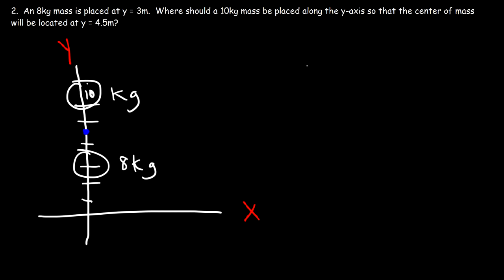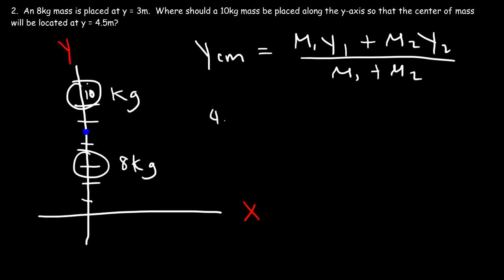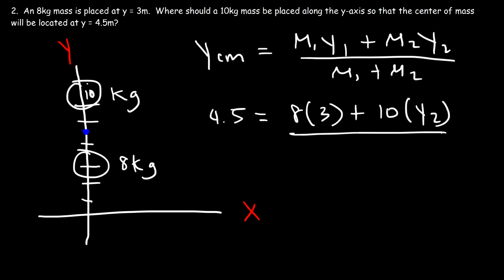The question is exactly where on the y-axis do we need to place it. We can use this formula: the center of mass along the y-axis is m1·y1 plus m2·y2 divided by the total mass m1 plus m2. We have this value already — it's 4.5. Mass 1 is 8 and it's located at position 3. Mass 2 is 10 and we're looking for its location. The total mass is 8 plus 10, or 18.